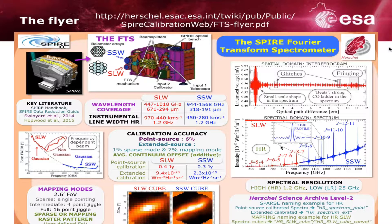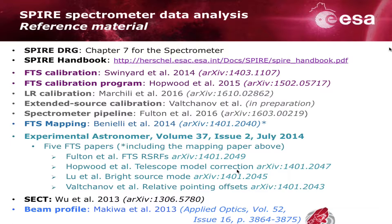In this presentation we're just going to be correcting the data and looking at the point source calibrated spectra, not the cube. Here's a list of reference material: the two at the top in black are the SPIRE Data Reduction Guide and the SPIRE Handbook. The Data Reduction Guide will help you understand your data, and the SPIRE Handbook will help you understand the instrument. There's also a whole list of calibration papers, a paper relating to SECT (the semi-extended correction tool), and a beam profile paper.